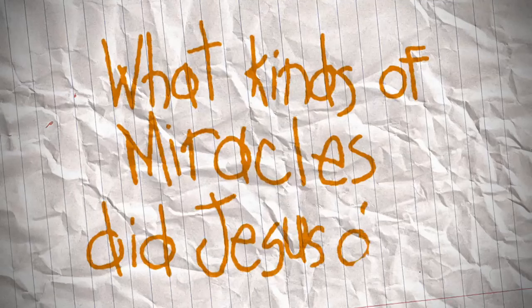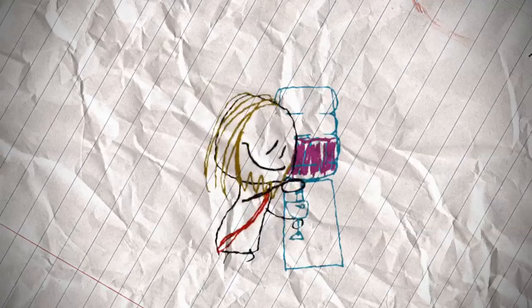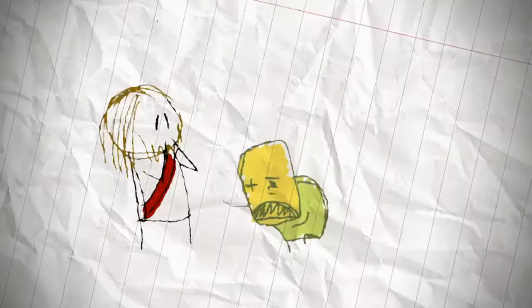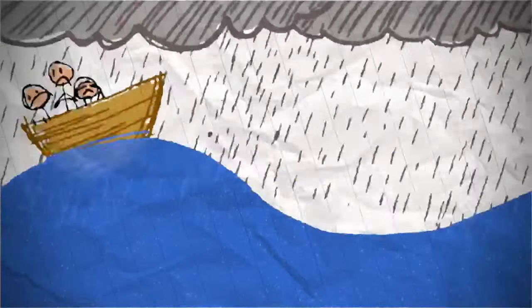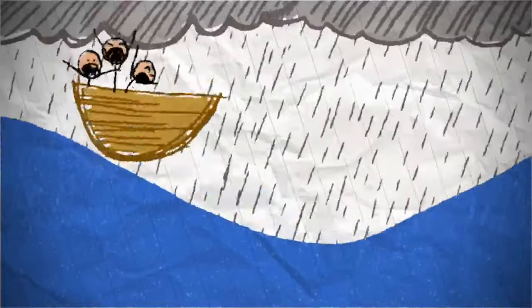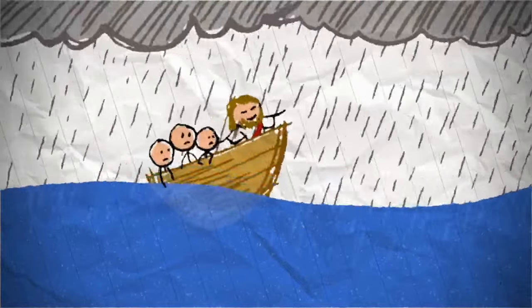What kinds of miracles did Jesus do? He turned water into wine. He made five loaves and two fishes spread a long way. He helped people if they were sick. He walked on water. There was a storm and it was all windy, and they were calling Jesus, Jesus. And then he calmed it down so they won't be scared.